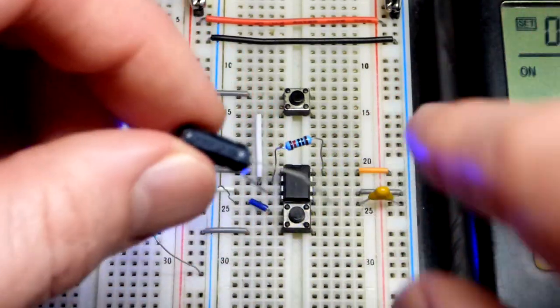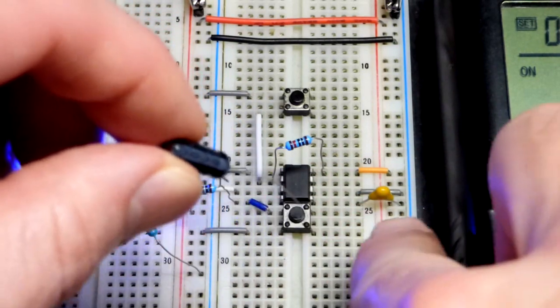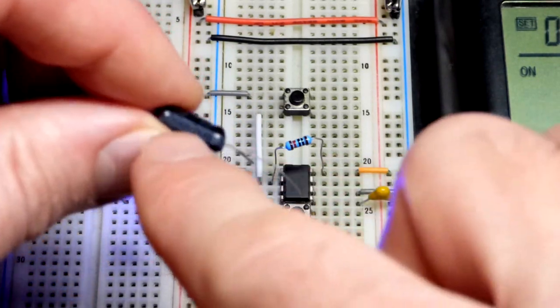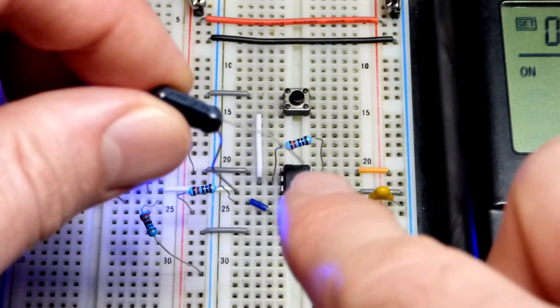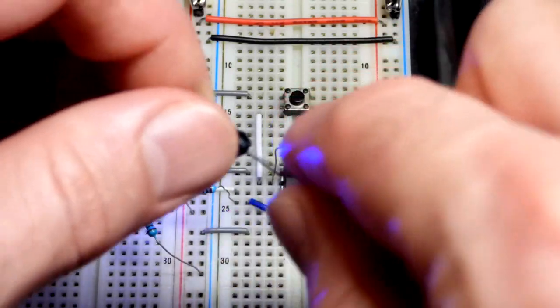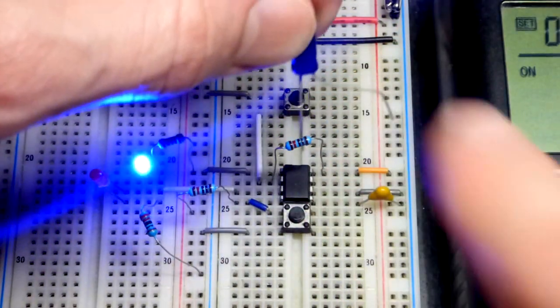So that brings us to the larger capacitor here. This one's polarized, you've got to put it in the right way. That one you can put in either way. And we've got a grey band, arrows, and dashes there. That's the negative side, it's also the shorter lead, and then we've got the longer side here.